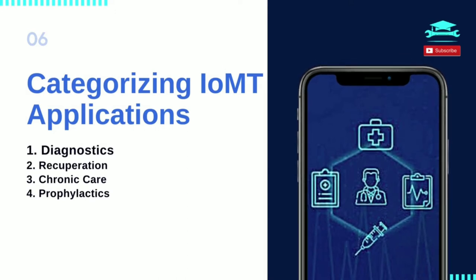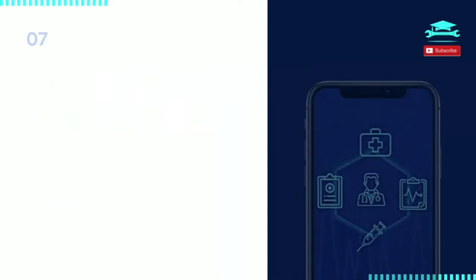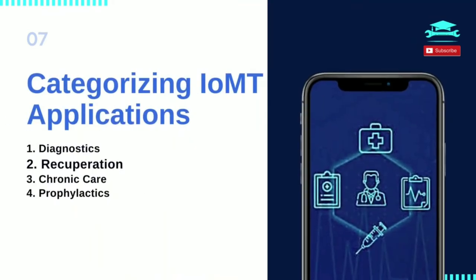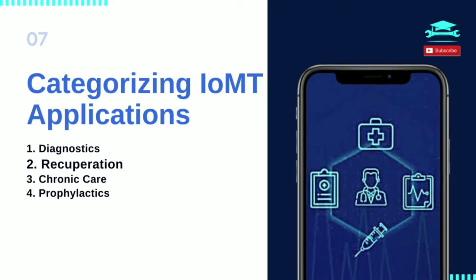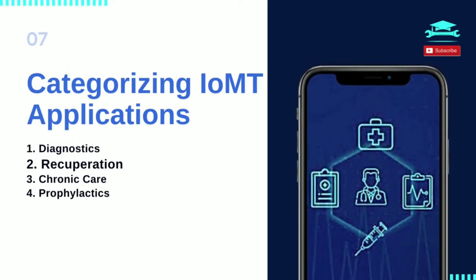In categorizing IoMT applications, the first area is diagnostics. Devices that track bodily metrics indicating medical conditions like diabetes and atrial fibrillation are becoming increasingly available. Key medical parameters like blood chemistry, blood pressure, brain activity, and pain levels can be gathered on a continuous basis. This can help detect early signs of disease onset or activity, improving responses.